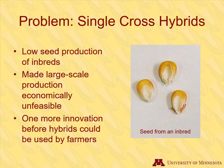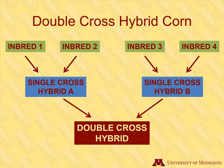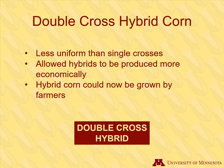There was one problem holding hybrids back: the fact that those weak inbreds didn't produce much seed, which made large-scale production of single cross hybrids economically unfeasible. There was one more innovation that occurred before corn hybrids became widely grown — double cross hybrid corn. Producing double cross hybrid corn requires an extra step. Inbreds are still created and crossed, but then two single cross hybrids, which produce large amounts of seeds, are crossed with each other to make a double cross hybrid. Double cross hybrids are less genetically uniform compared to single crosses, but their use allowed hybrid seed to be produced more economically, so farmers could grow them.